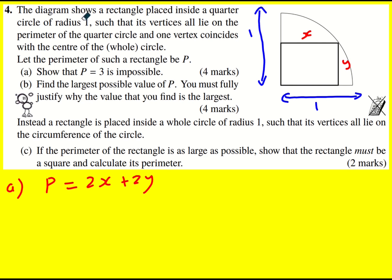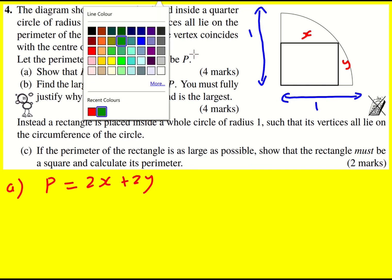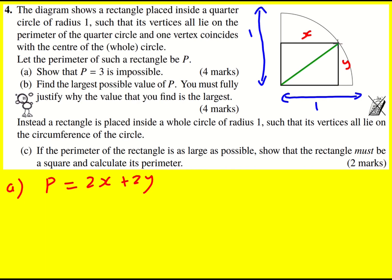Now there's one other thing I can use — and you should always try to use this in these circle questions, because I haven't actually used the circle yet. I've drawn a line from the top-right corner back to the center, and that also has a length of 1 because that's the radius. I can create a right-angled triangle, and therefore x squared plus y squared equals 1.